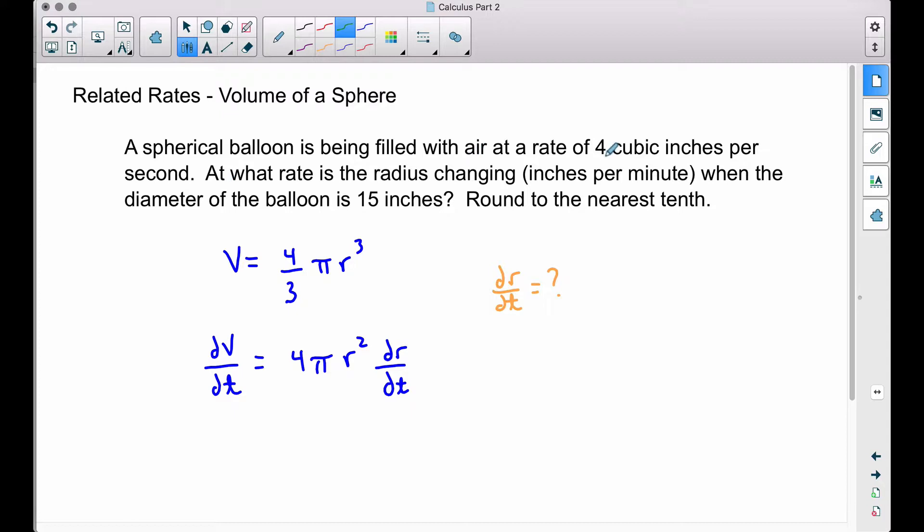That's the air that's filling up this balloon. And notice we have cubic inches. Cubic inches or cubic anything is a volume, therefore dV/dt is 4 cubic inches per second.